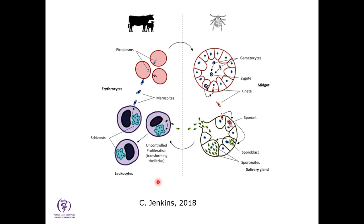The highly pathogenic Theileria species in Africa and Asia are called transforming Theileria — they don't stop reproducing in the lymphoid tissue, causing animals to develop tumors from uncontrolled asexual reproduction, leading to very high mortality. We're thankful that Theileria orientalis is non-transforming; animals don't have that uncontrolled lymphoid tissue proliferation. That's a definite distinction between the two groups.